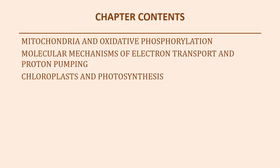Last but not least, in part two of our lecture for chapter 14, we're going to take a look at the chloroplast and how the structure of the organelle is perfect for the utilization of photosynthesis — the process that autotrophs such as plants utilize to extract energy from sunlight and generate their own food in the form of glucose molecules.